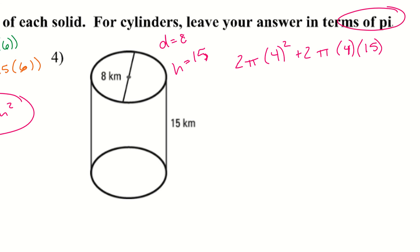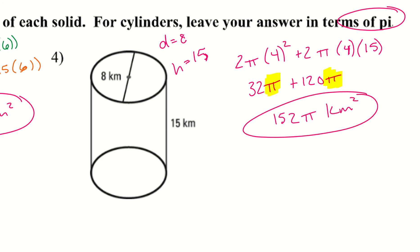Starting with the left side: 2 times 4 squared gives me 32, leaving me with 32π. On the right side, 2 times 4 times 15 gives 120π. Since both terms have pi in common, I can add the numbers together to get 152π kilometers squared. We leave it in terms of pi — just solve each side individually, add the numbers together, and keep pi off to the side. Make sure you don't plug pi into a calculator.